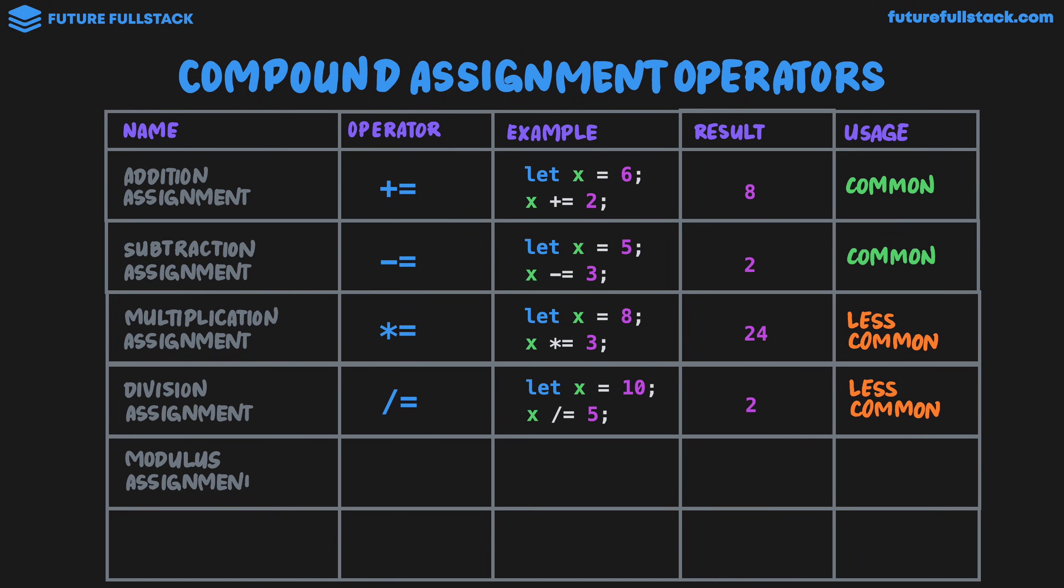We then have modulus assignment, which is percentage equals. Looking at an example, let x equal 8. So x modulus equals 3 would change the value of x to 2. That is 8 divide 3 goes in twice remainder 2. And as a reminder, the modulus is always the remainder. In terms of its usage, it's rarely used.